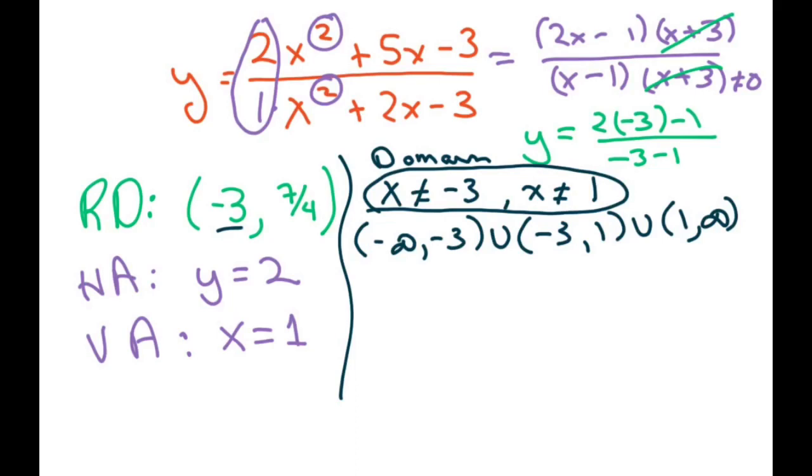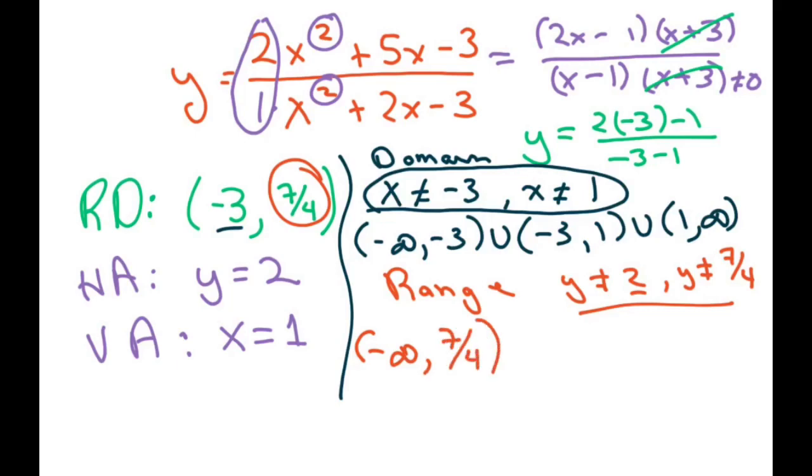And your range, y is your range, y cannot be 2, and y cannot be 7 fourths. And that would be your range basically, but writing it in interval notation, which is bigger? 2 is bigger than 7 fourths, so I'm going to write negative infinity to 7 fourths, or 7 fourths comma 2, or 2 comma infinity.